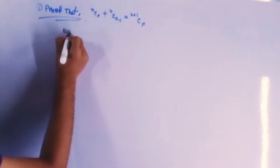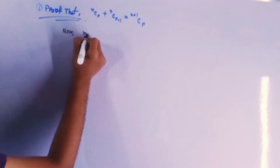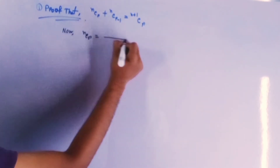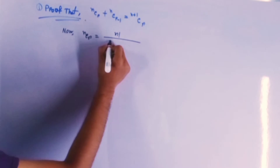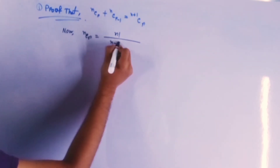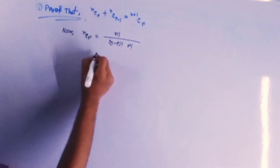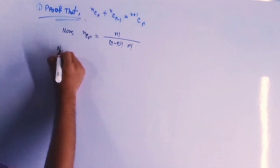Now this question is to prove that nCr plus nC(r-1) equals to (n+1)Cr. Now nCr equals to n factorial by n minus r factorial times r factorial.